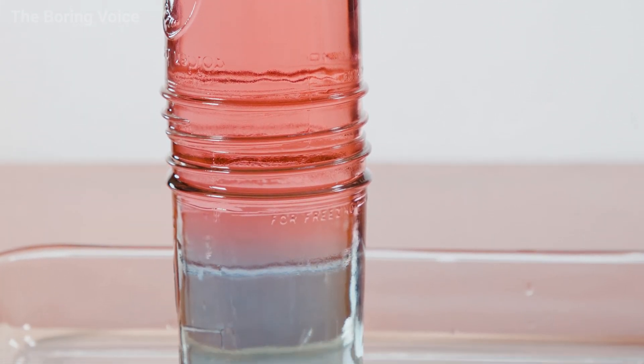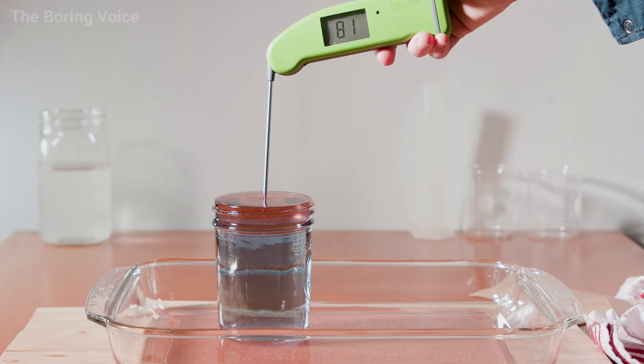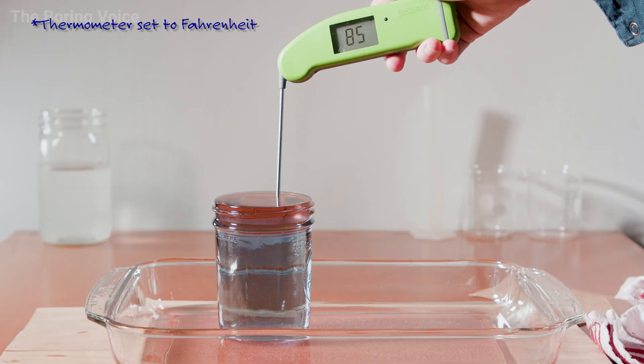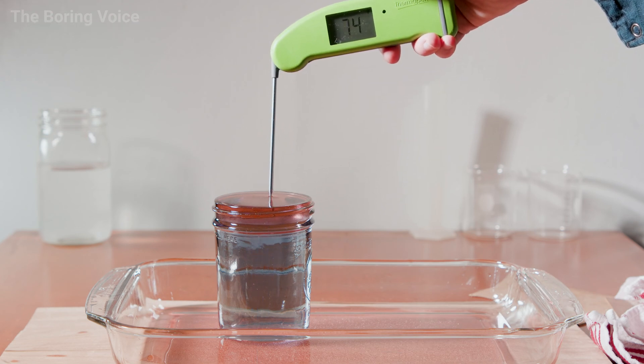If I remove the top jar, I can actually measure the temperature difference with my instant read thermometer. The top layer is 20 degrees higher than the bottom layer. This small difference in density is really important for aquatic life.